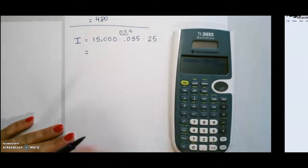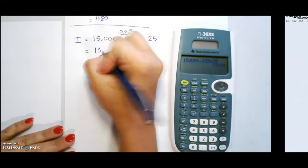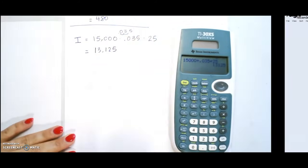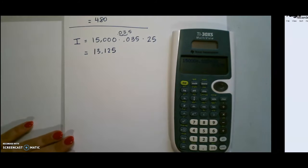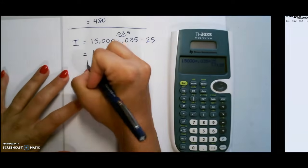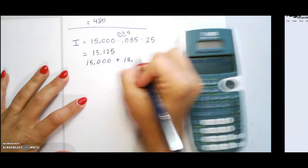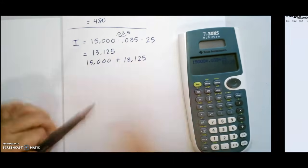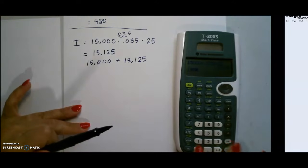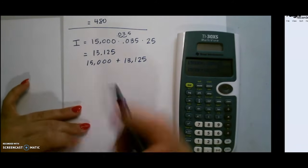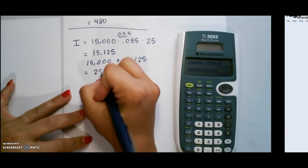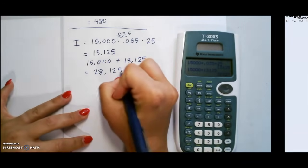And this gives us our interest. Since it asked us for the total amount that they will pay on the loan, we would then add our principal amount plus our interest to get our total. So we can simply add this to get a total payment of $28,125.